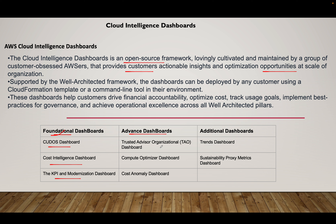We have some advanced dashboards — what we call TAO, which is more of a Trusted Advisor report at the organization level. We have Compute Optimizer, where you'll see recommendations for moving from one instance to another to save cost — for example, moving from an m5.8xlarge to an m5.4xlarge or m5.2xlarge depending on the recommendation. We also have the Cost Anomaly Dashboard and additional dashboards: Trends — which is more on the financial side — and the Sustainability Proxy Metrics dashboard.